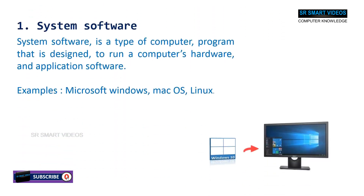System software is a type of computer program that is designed to run a computer's hardware and application software. Examples of system software are Microsoft Windows, Mac OS, and Linux.